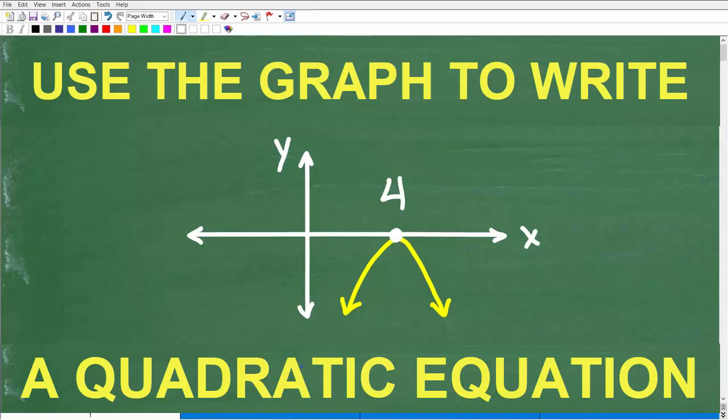In this video, we are talking about quadratic equations. The question is, we want to write an equation for this situation. We have a parabola that's facing downward, and it is bouncing off the x-axis at 4.